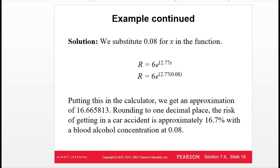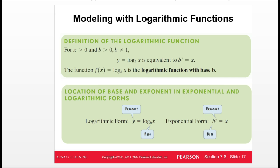A logarithm is kind of the inverse — the opposite — of an exponential. In exponential form, b^y = x. A log switches things around: the exponent y is isolated by itself. A logarithm is an exponent. The base of the logarithm is the same as the base of the exponential, and the output of the exponential form becomes the input of the logarithm.